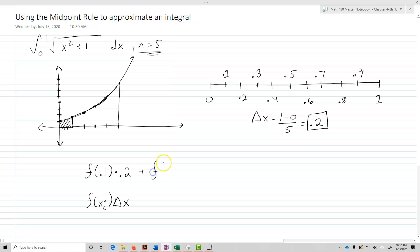Plus f of now 0.3 times 0.2, plus f of 0.5 times 0.2, plus f of 0.9 times 0.2.